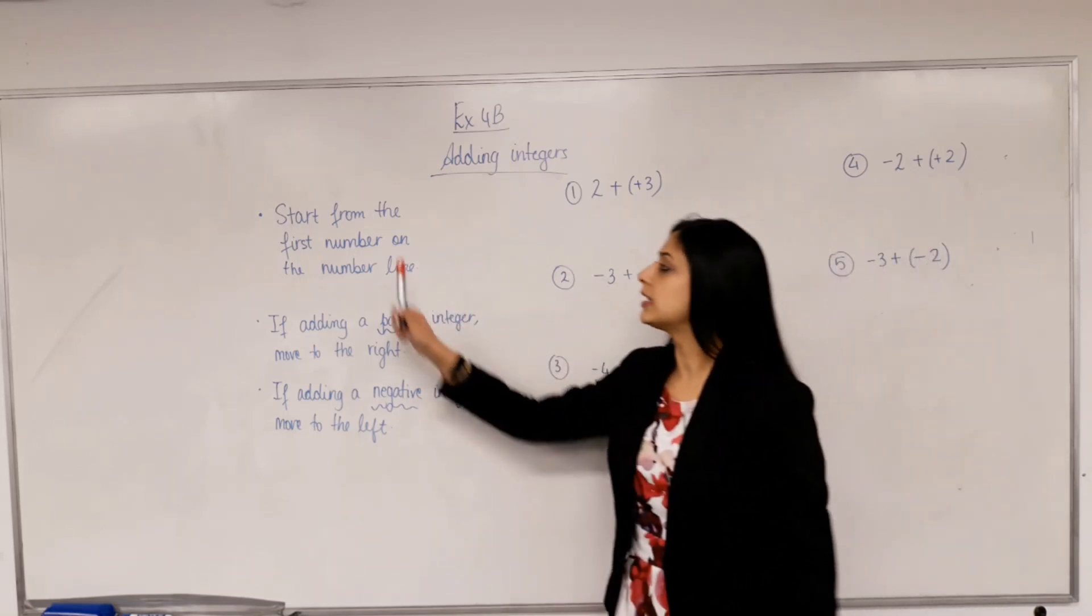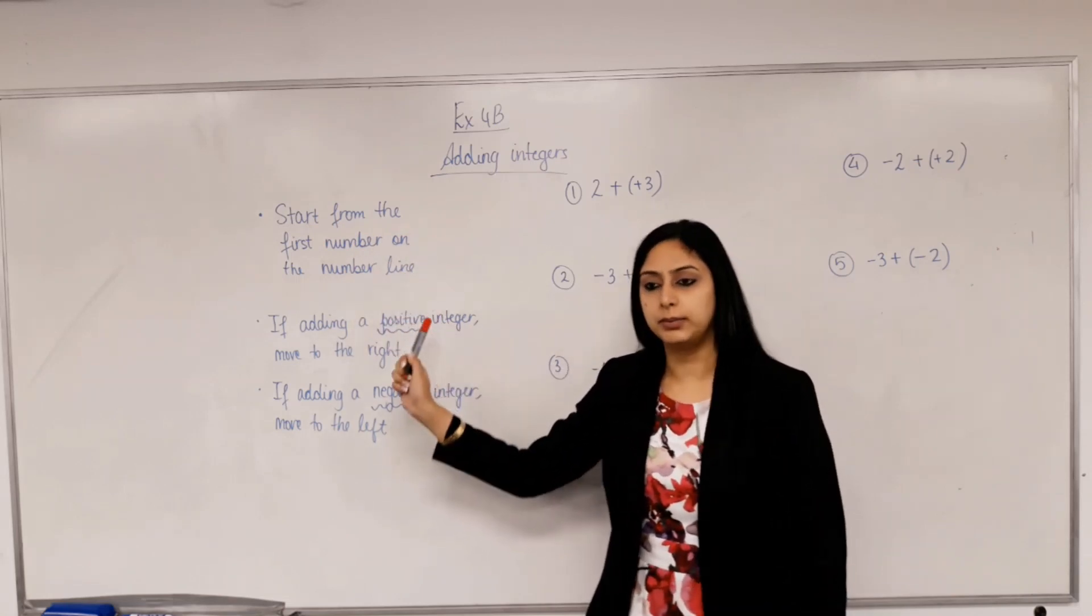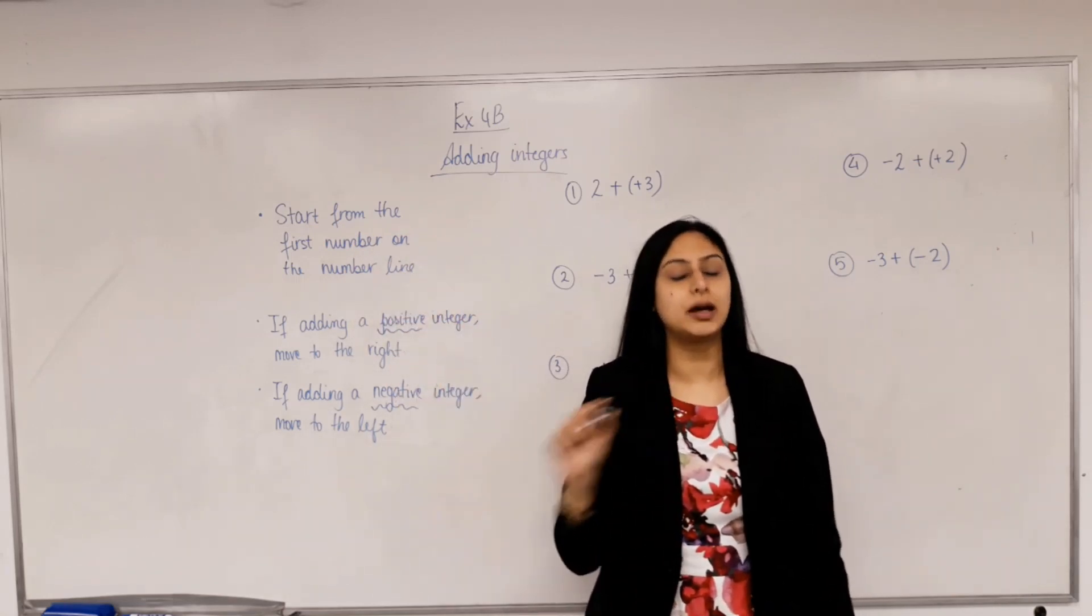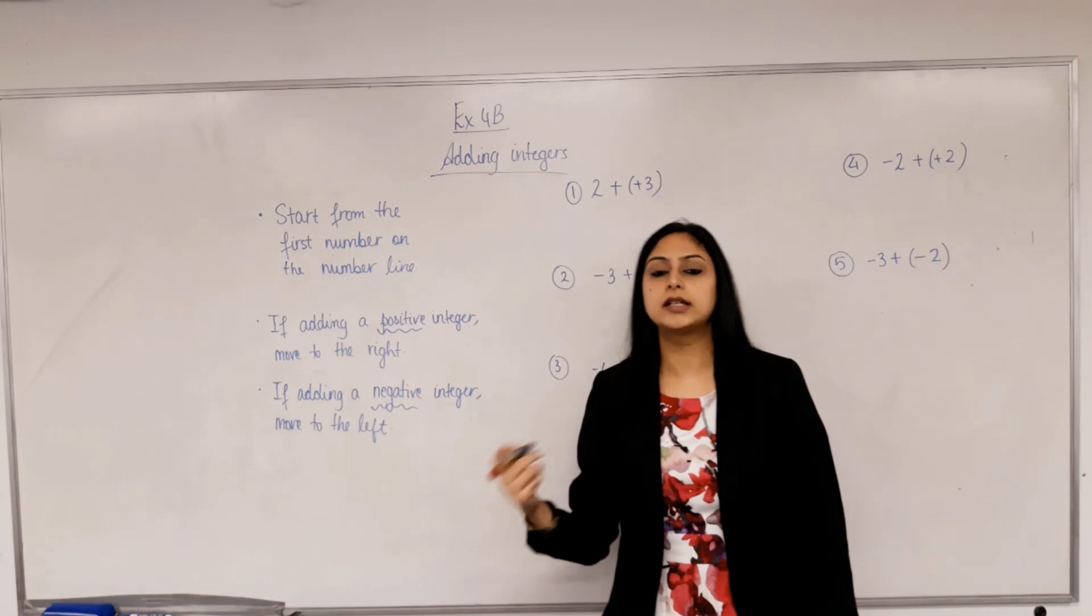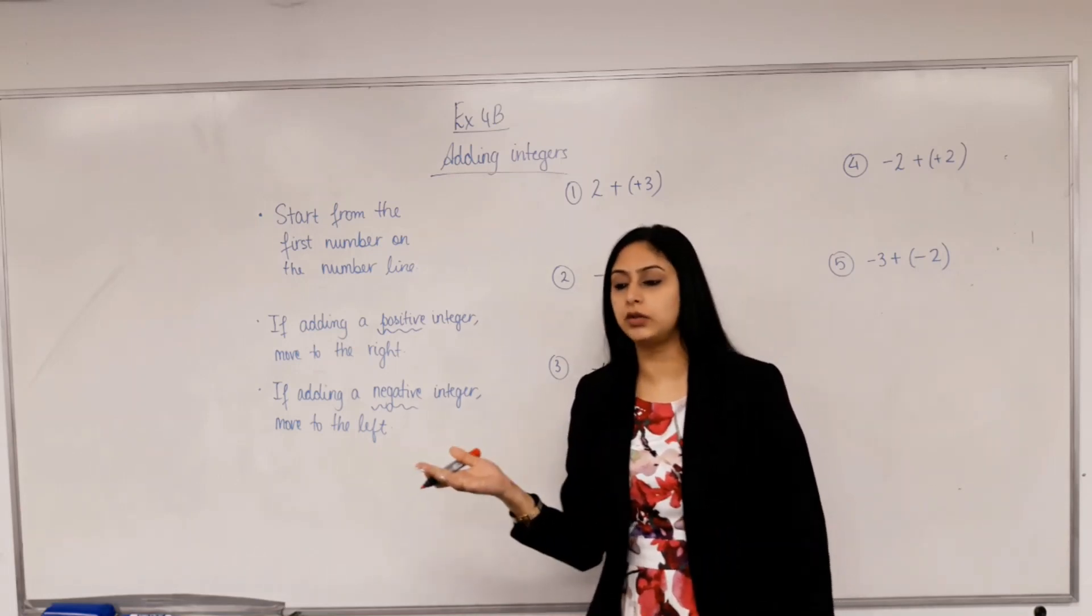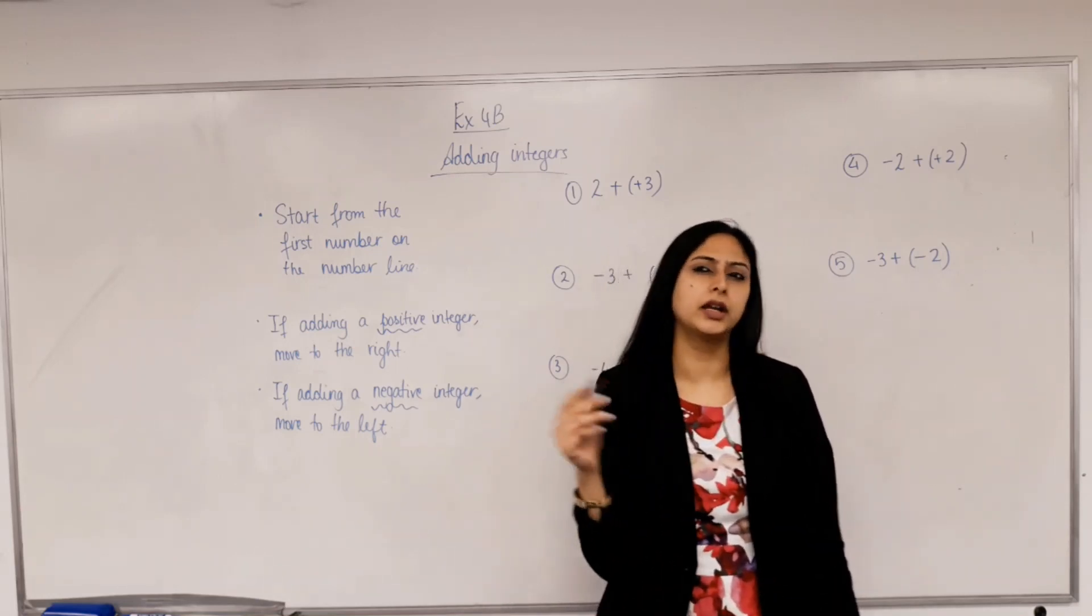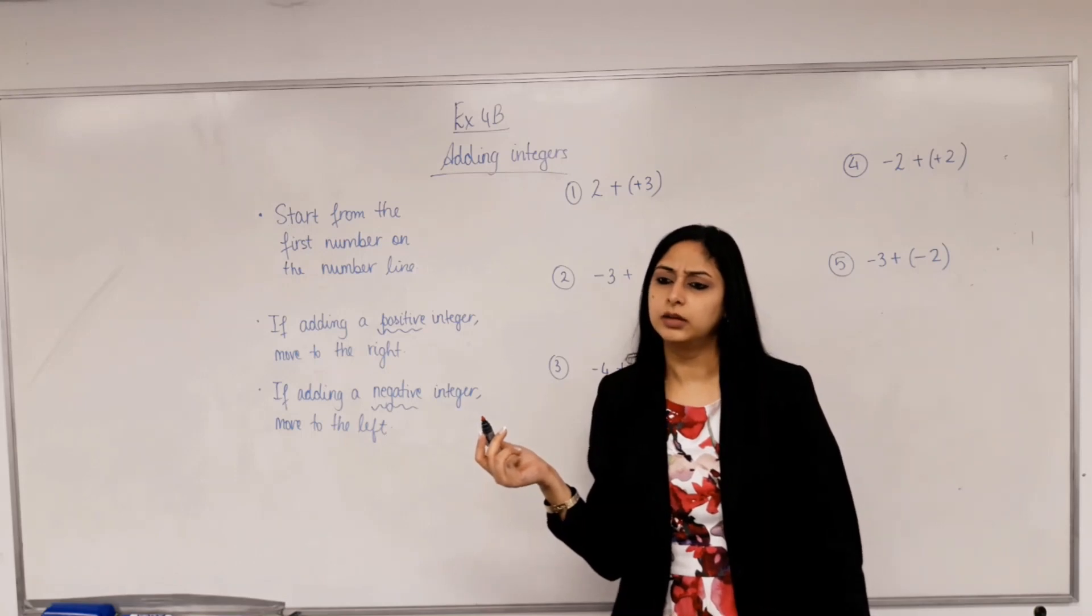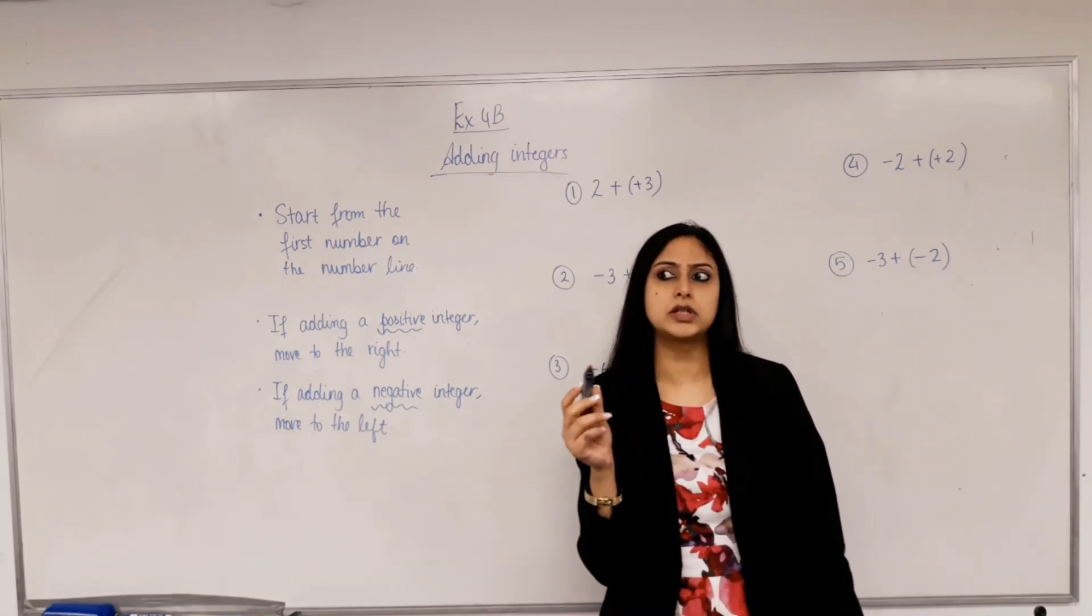So, the rule is start from the first number on the number line. So today we're only using a number line to add and the next lesson I'll tell you how to do it without the number line because, of course, drawing a number line in everyday life would be really weird because if you're standing, someone gives you, you know, what's negative 5 plus 3, you're not going to say, okay, number line, negative 5, this, this.